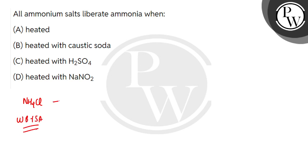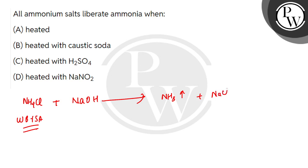If I react it with caustic soda, that is NaOH, what will happen? NH3 will become gas, which gives ammonia, along with NaCl salt and H2O.